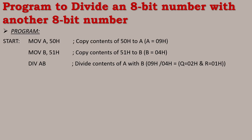Next instruction: DIV AB. That means divide the content of A with the content of B — divide contents of A by B. So 9 divided by 4 is performed. In the background, quotient is 2 and remainder is 1.